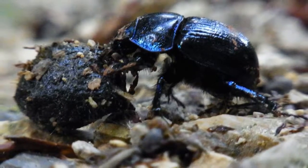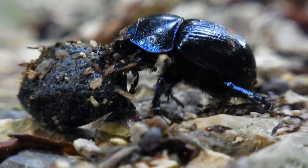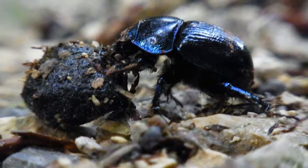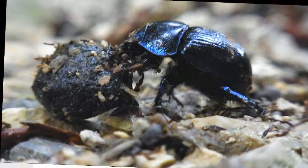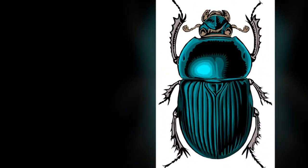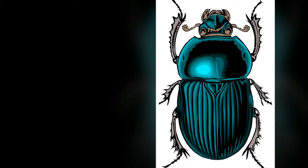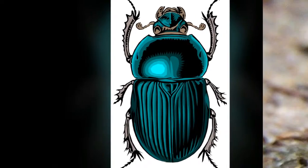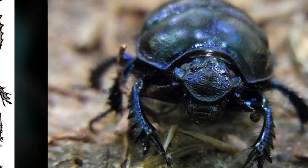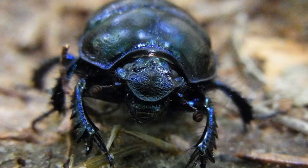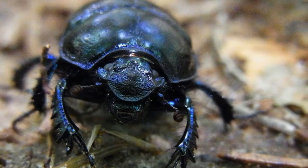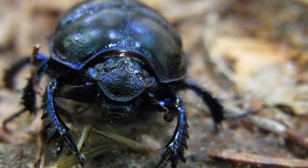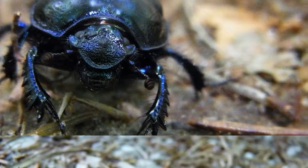Dung beetles include a large and diverse group of insects which feed on dung and feces. There are 7,000 species of dung beetles that can be found on each continent except Antarctica. Dung beetles inhabit different types of ecosystems. They can be found in rainforests, deserts, and grasslands.